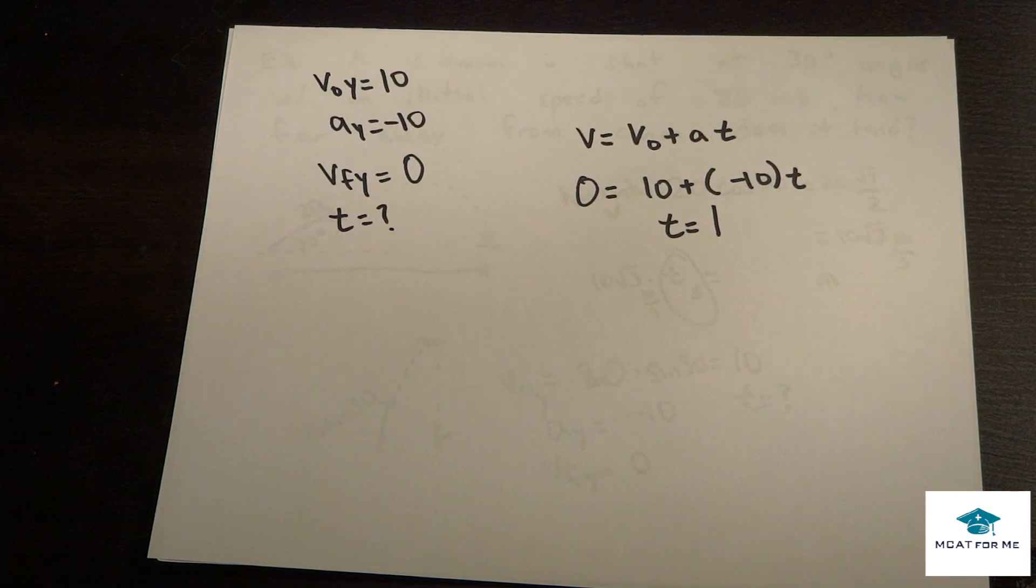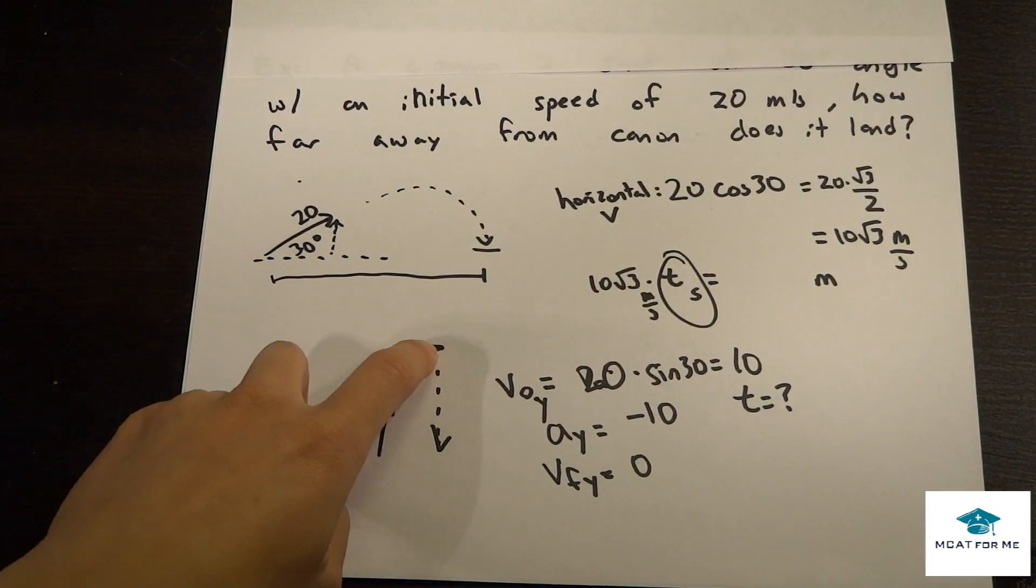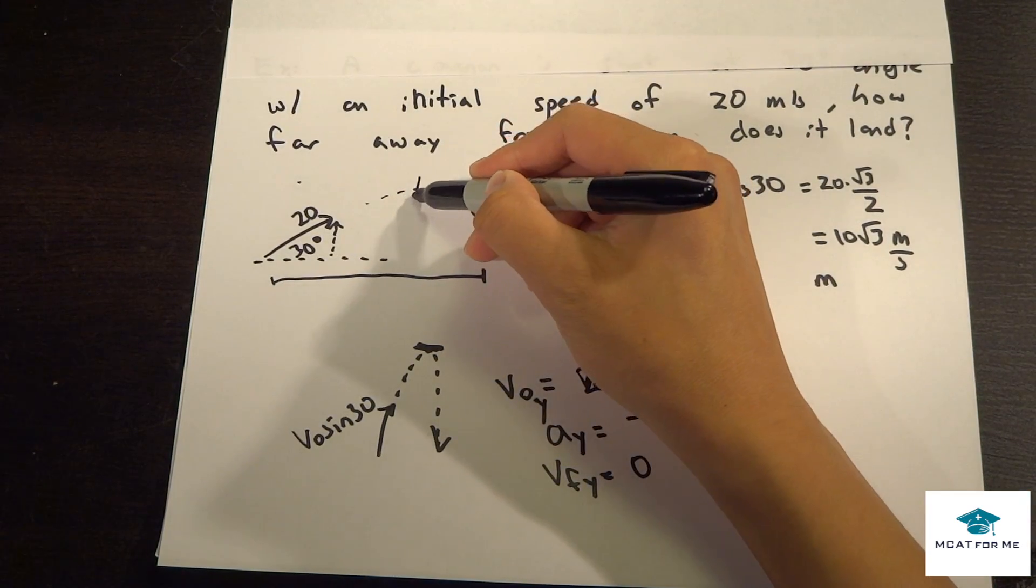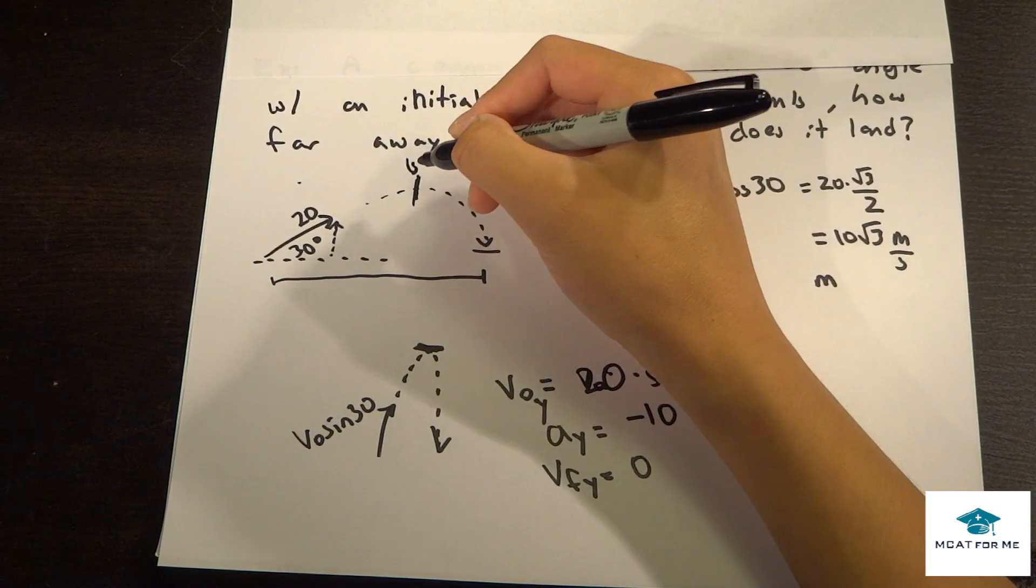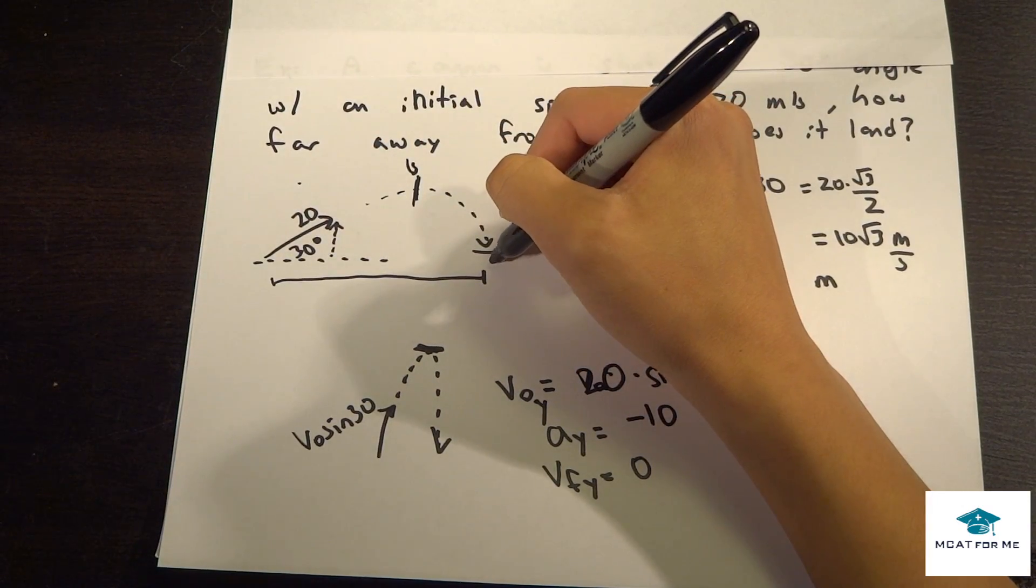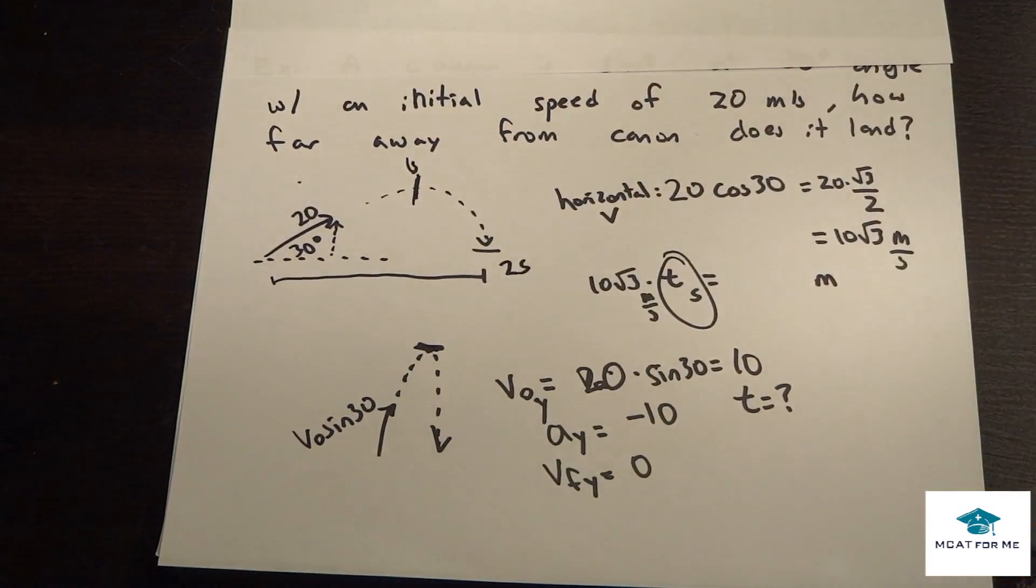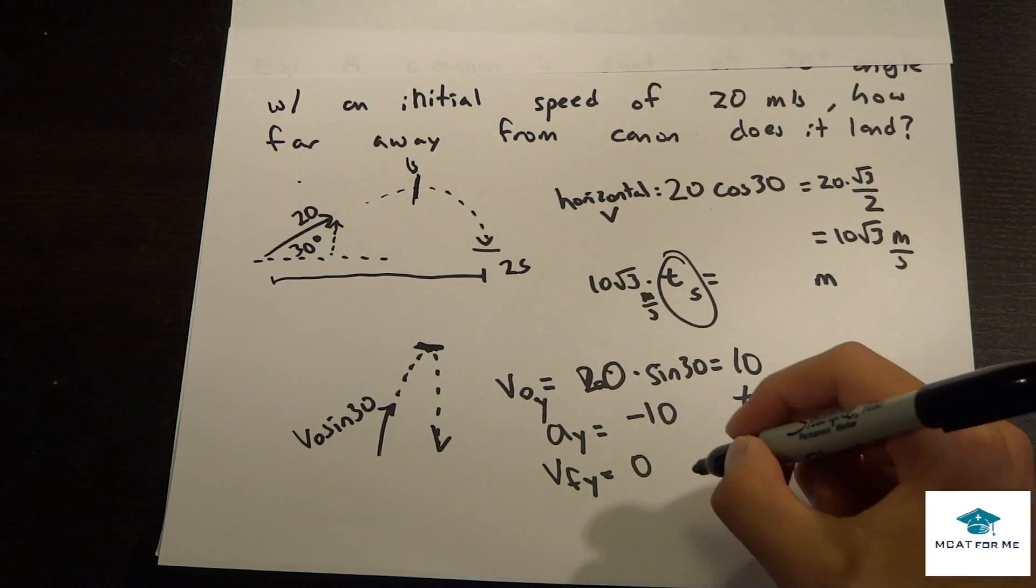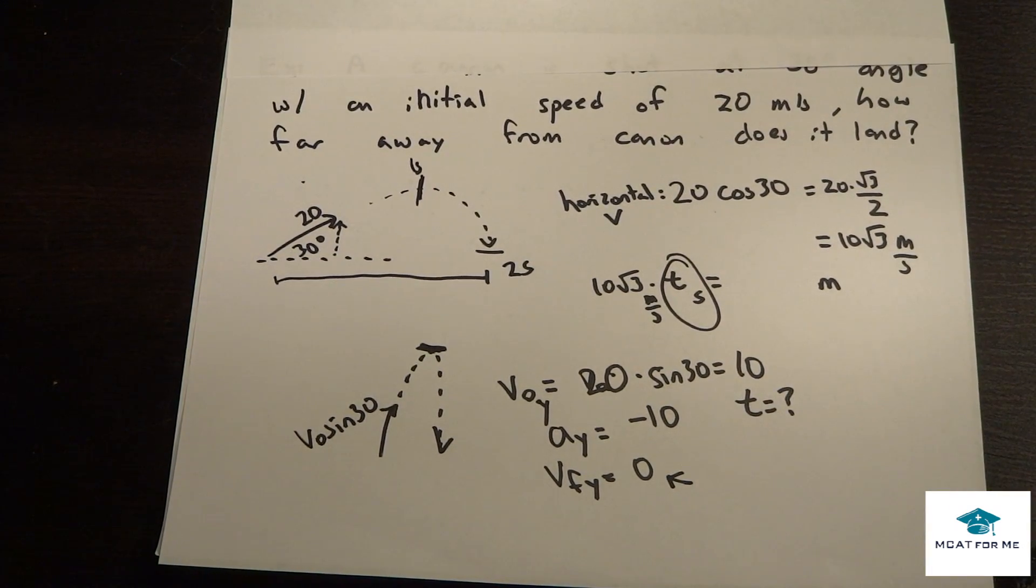T equals 1, what does that exactly tell us? That means to get from the very bottom to the top, it took us 1 second. But that's not the total time, that just got us to this max height. It took us 1 second to get there. That means to get all the way to the bottom back again, it's going to take us 2 seconds. It's going to take us twice the time. All we found here was the halfway point, because we said V final equals 0. If we were to make V final negative 10, that would have solved it as well, but this was simpler to me.